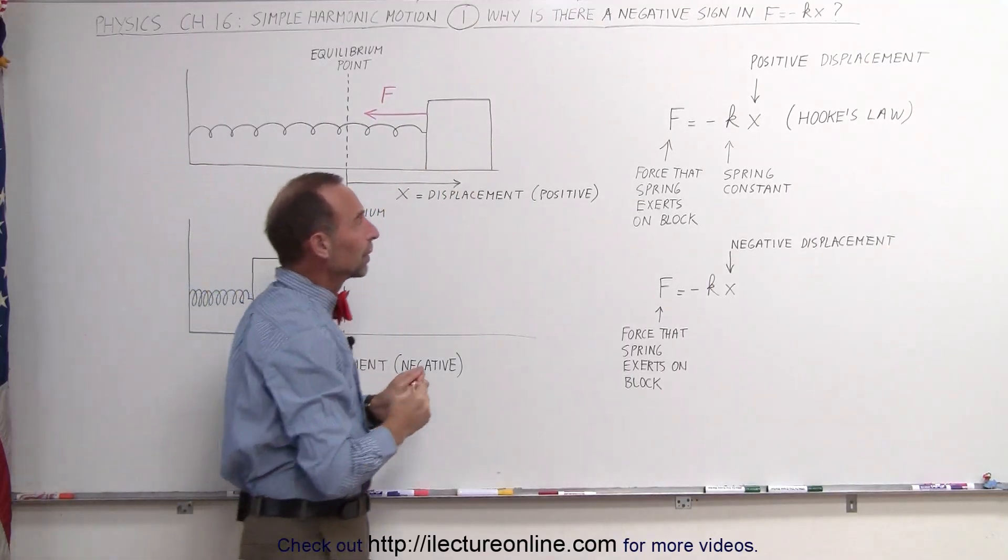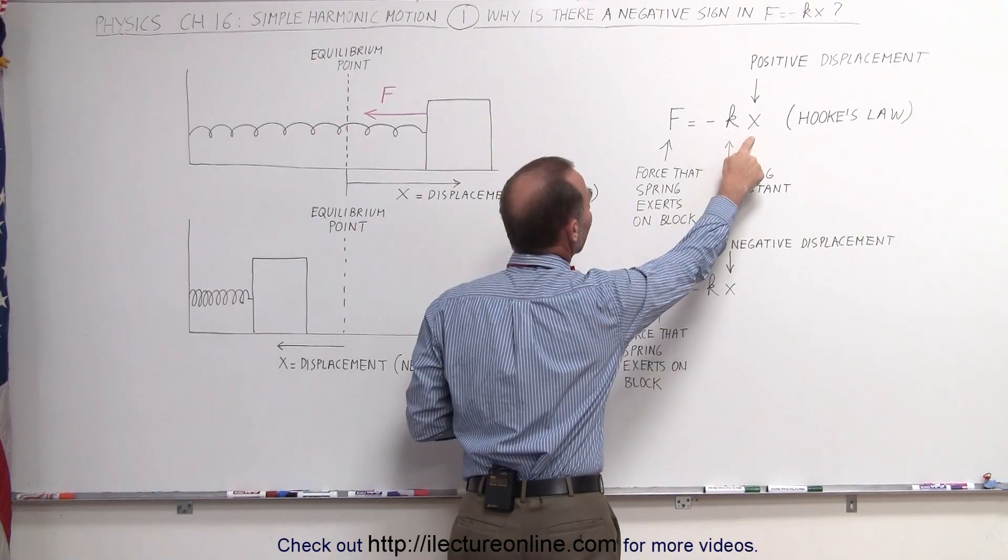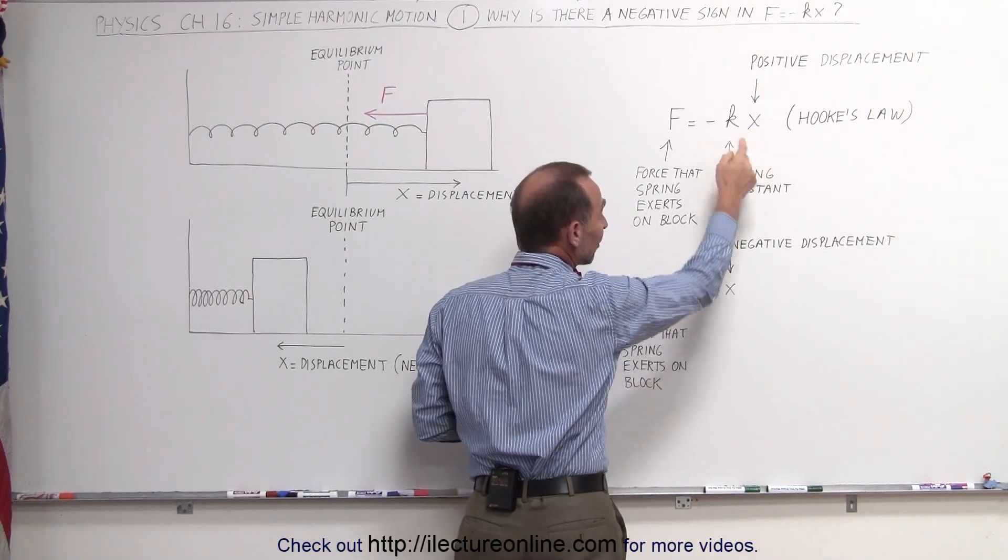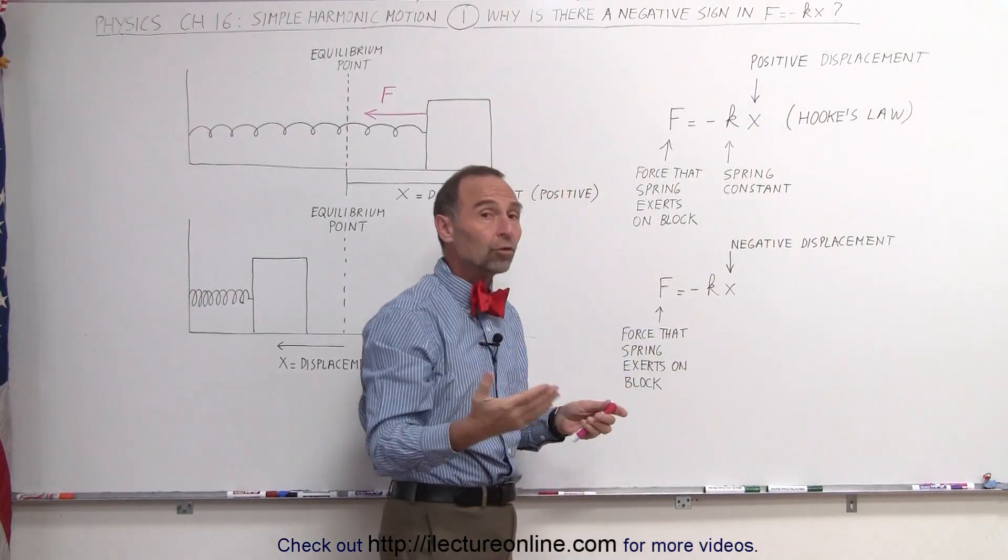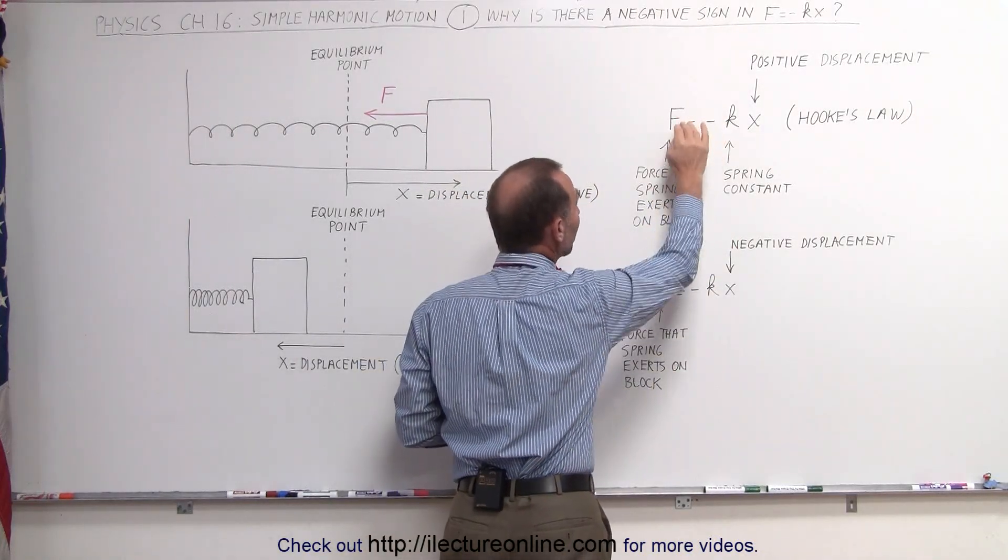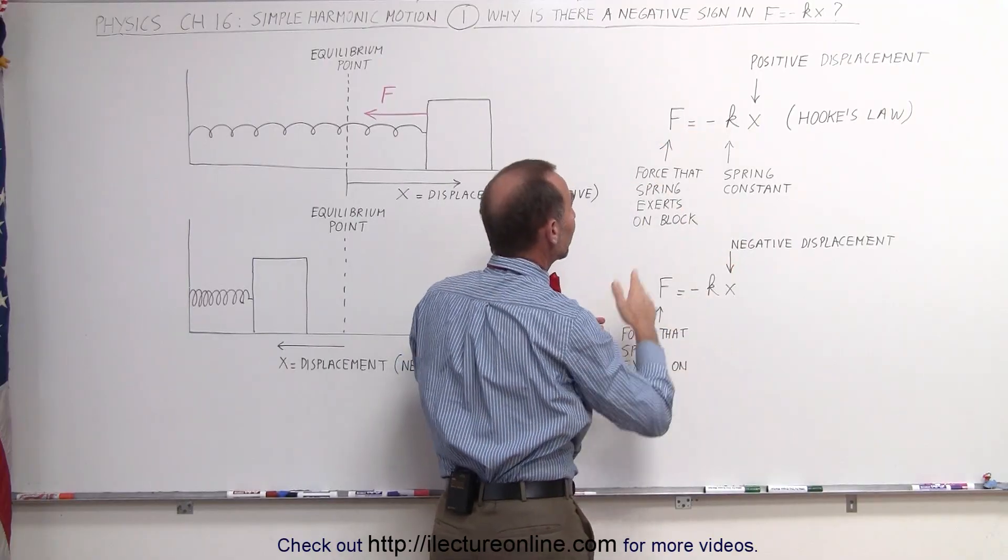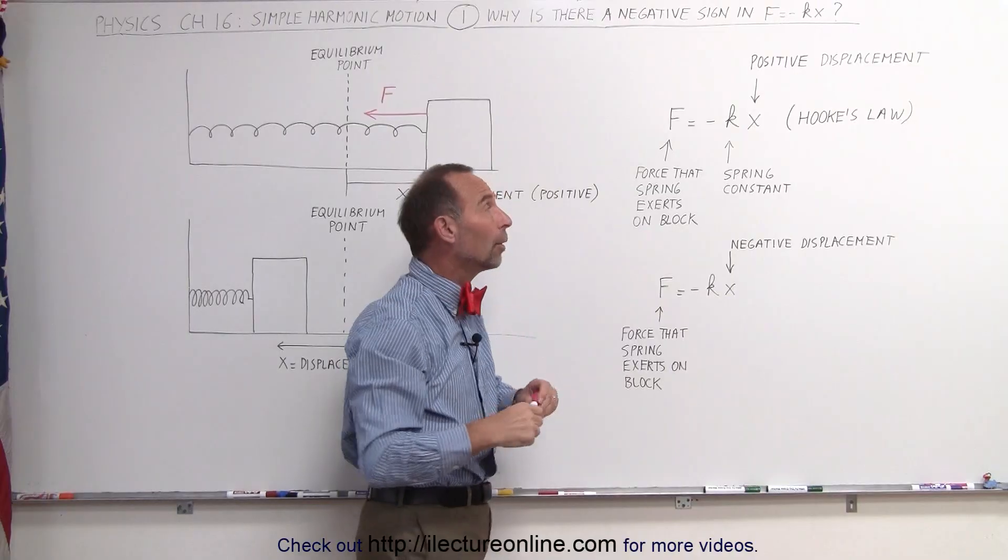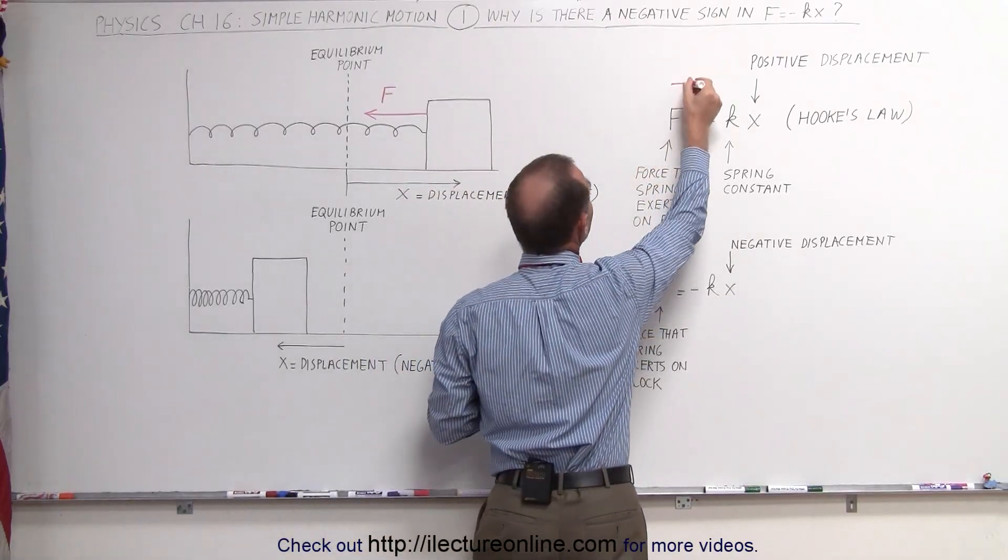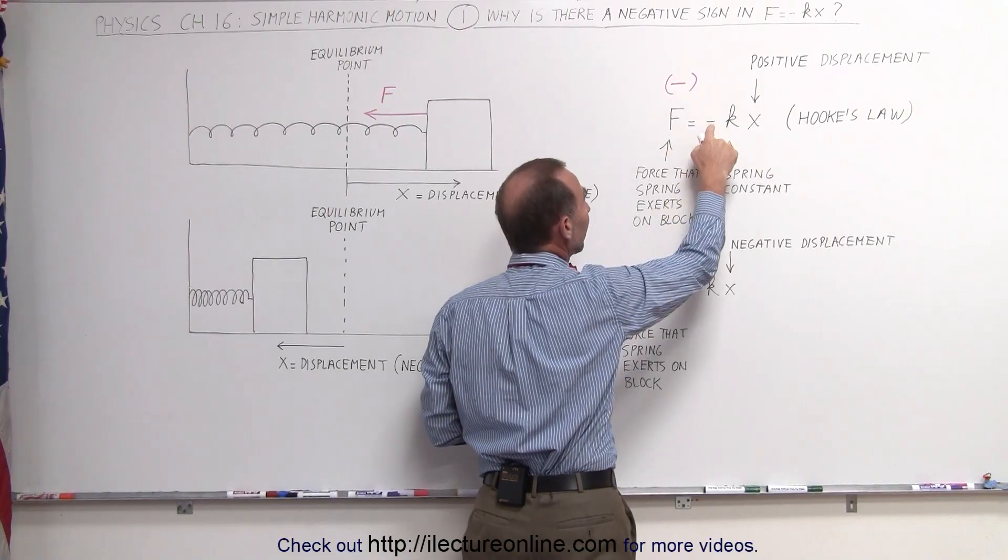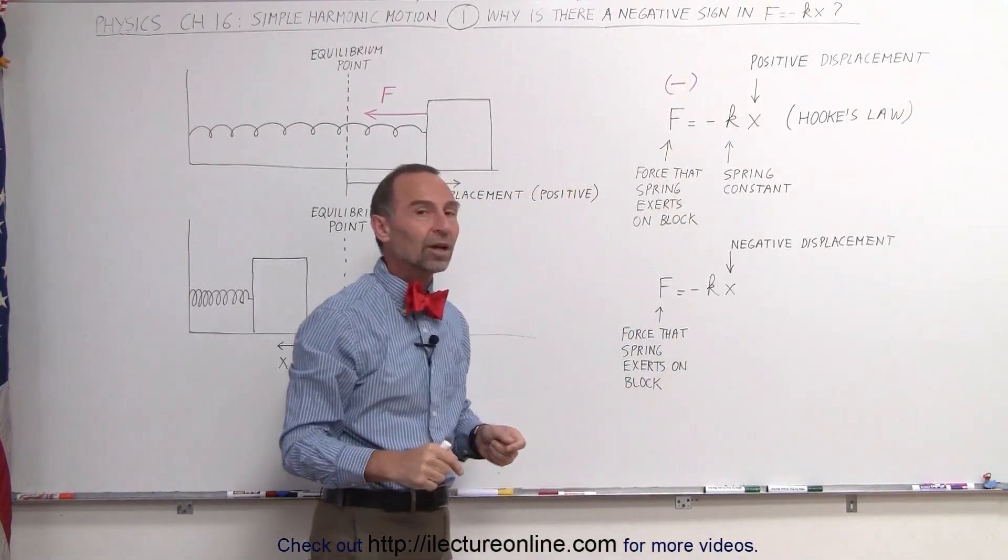Now let's go back to the equation. F equals minus kx. If x is a positive quantity, and since k is simply a spring constant which is also a positive quantity, then F without the negative sign would be positive. But that's not correct, because when the block is to the right side of the equilibrium point, the force is actually a negative quantity, and the only way to get that to be a negative quantity is to put a negative sign in that equation. That's what it's there for.